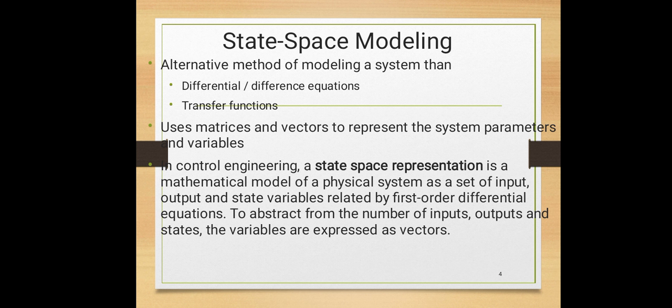This particular type of modeling uses matrices and vectors to represent the system parameters and variables. In control engineering, a state space representation is a mathematical model of a physical system as a set of input, output and state variables related by first-order differential equations. To abstract from number of inputs, outputs and states, the variables are expressed as vectors.